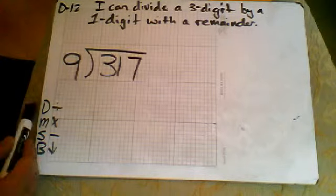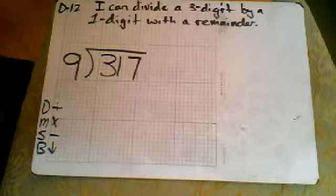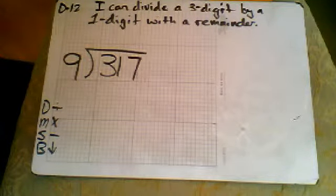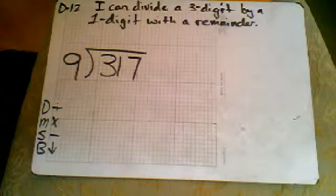I have my steps here: dirty monkeys smell bad—divide, multiply, subtract, bring down. As a reminder, you can back up on some of the earlier targets to ensure that you understand why those steps work the way they do.